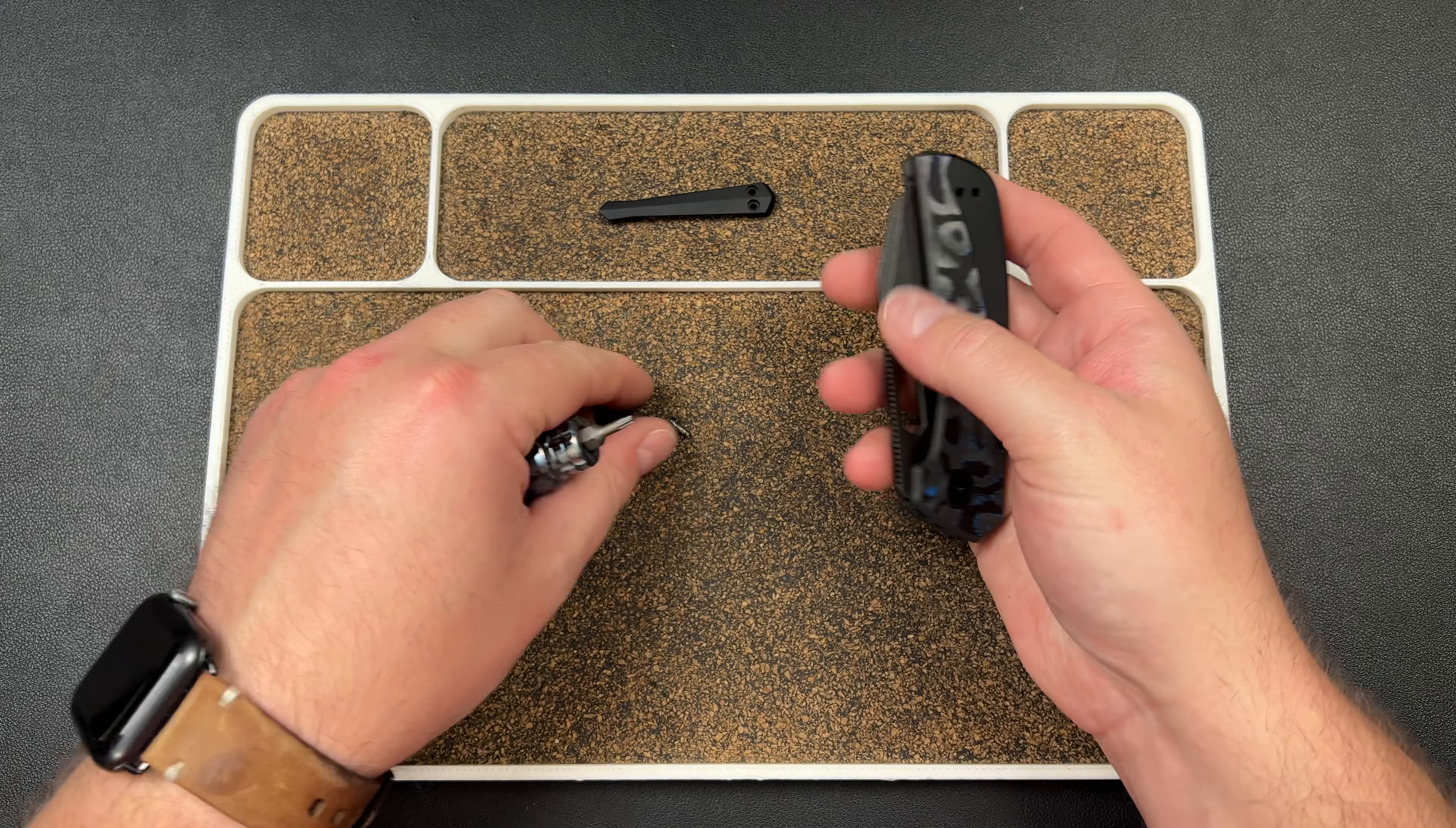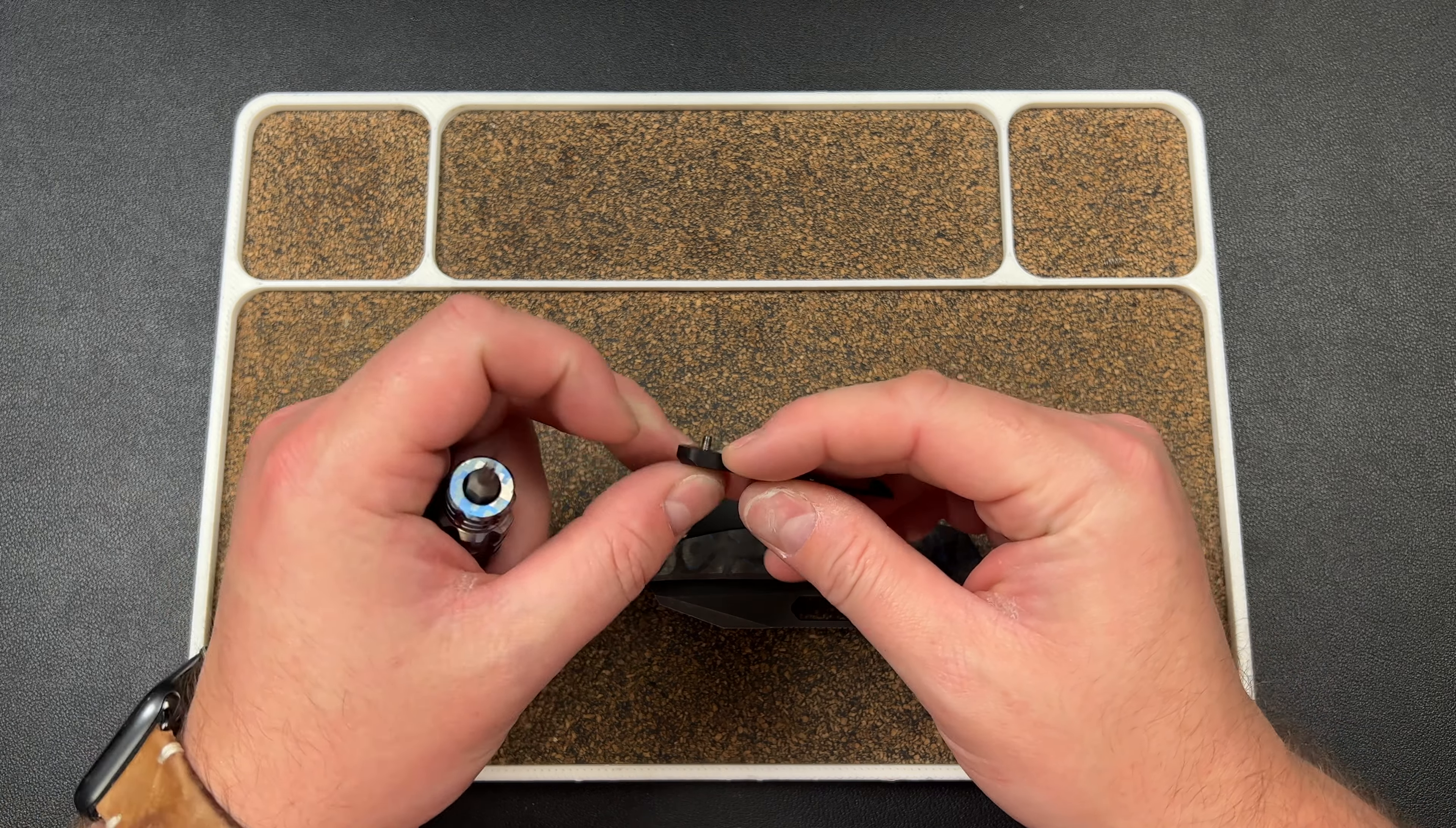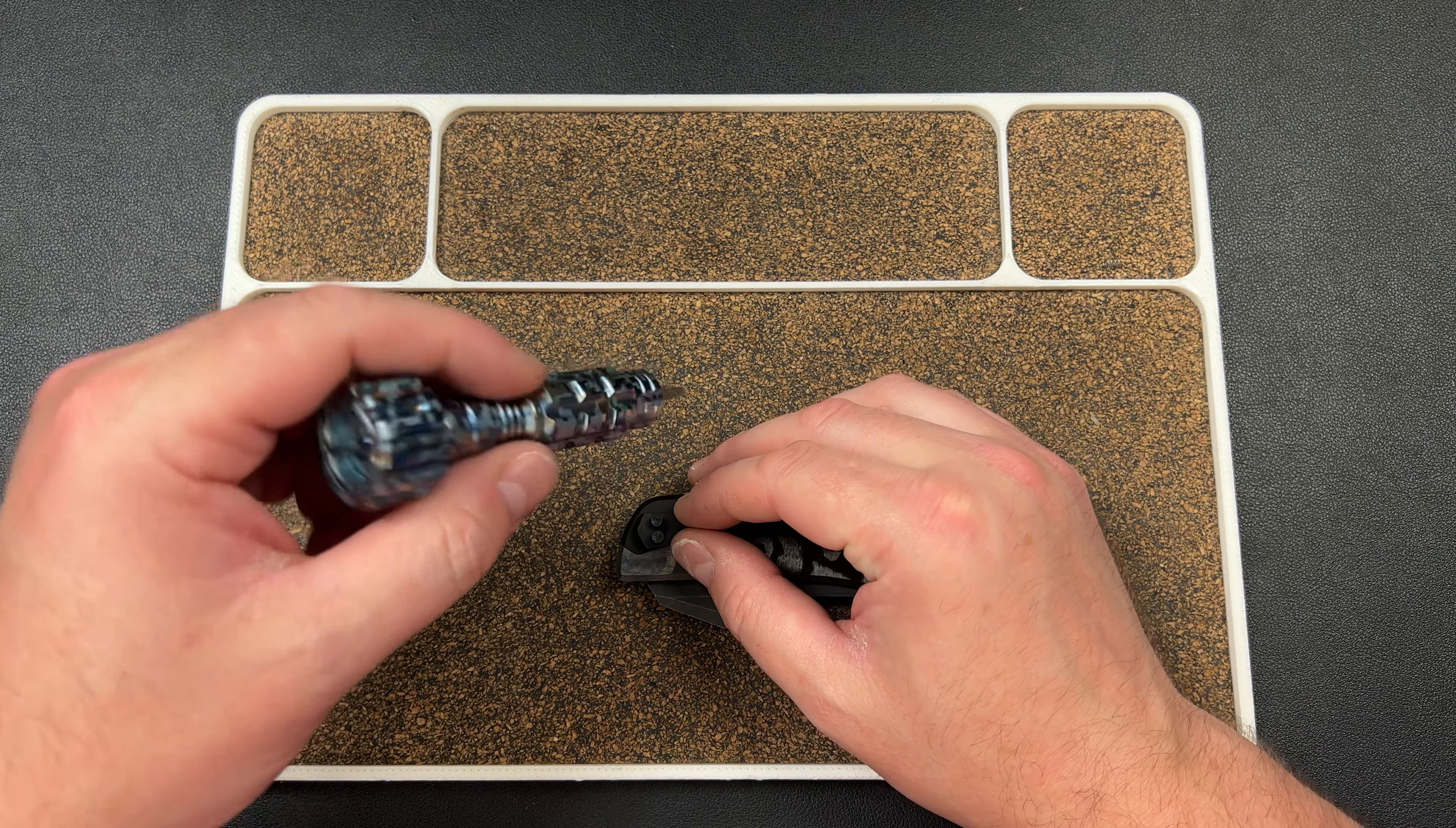You just flip it over and then you put your clip on the other side. Again, we want to add a slot for the clip so that it locks into place a little bit better.